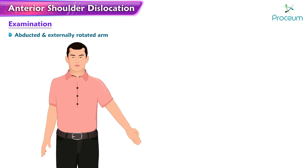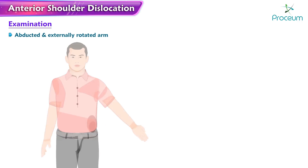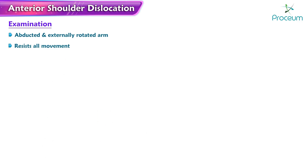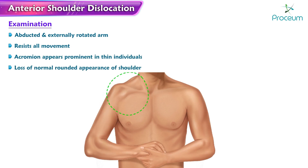When a shoulder is anteriorly dislocated, certain characteristic findings can be observed during a physical examination. The affected arm tends to be slightly abducted and externally rotated, and the patient experiences resistance and pain when attempting any movement. In individuals with a slender build, the acromion may appear more prominent than usual, and the normal rounded contour of the shoulder is disrupted.